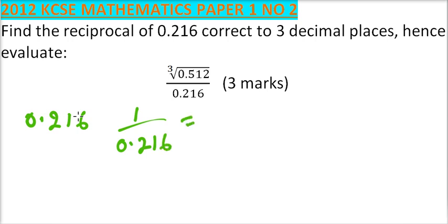we multiply by 10, both the numerator and the denominator. So we get this is the same as 10 divided by 2.16, which is equal to 10 multiplied by.